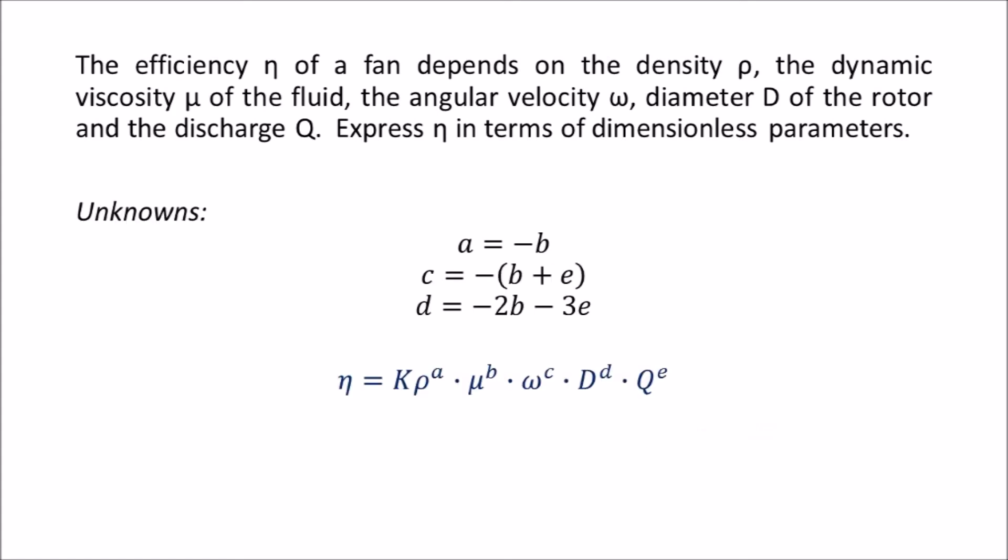Now that we've reduced our number of unknowns, we return to our initial expression for efficiency, and substitute for the exponents that we've redefined. This gives us an expression for efficiency with only two unknowns remaining.